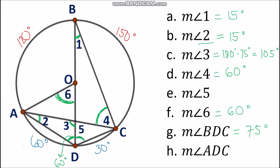To find the measurement of angle ADC, we can use the inscribed angle theorem since it is an inscribed angle intercepting arc ABC, or we can simply add angle ADB and angle BDC. Adding 60 degrees and 75 degrees gives us angle ADC = 135 degrees.